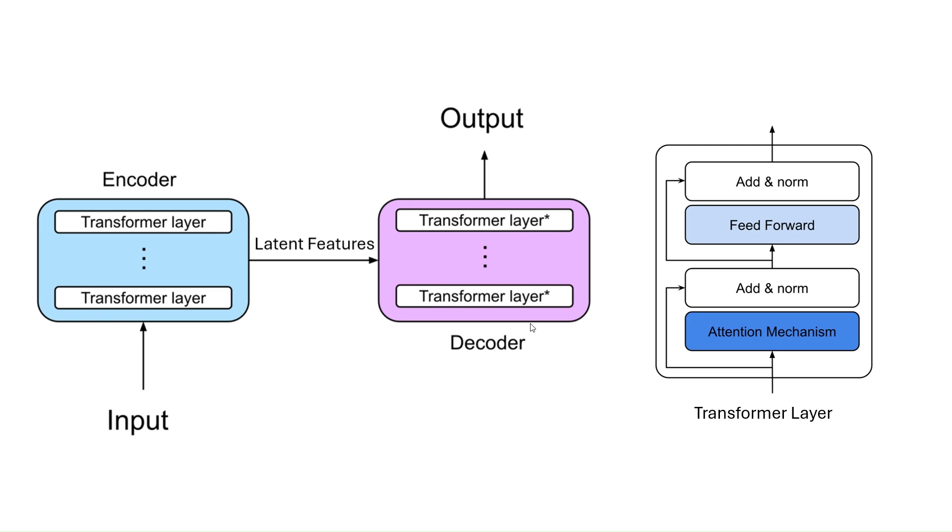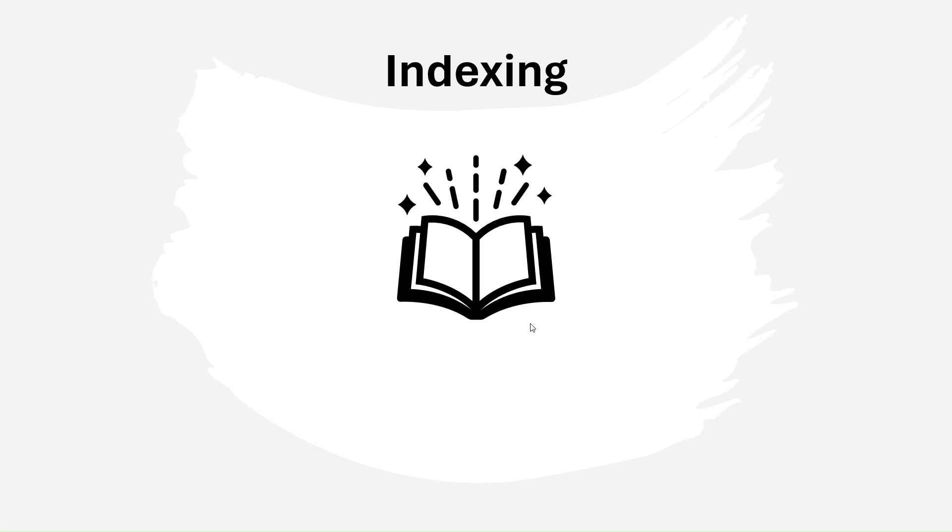The main component of a transformer layer is a multi-head attention module, or simply an attention mechanism, which we are going to explain in this video. Using this module, the model can relate each word in the input text with others. To understand the attention mechanism, we first talk about a simple indexing task.